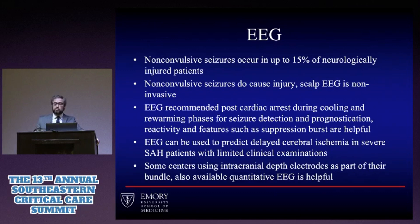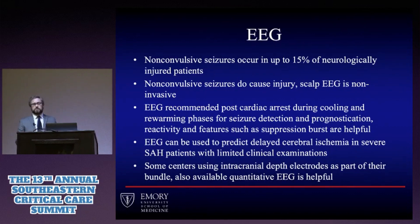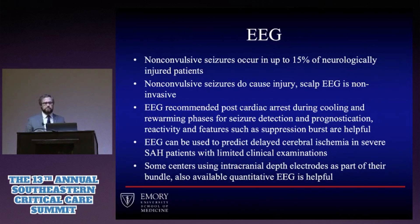We're also doing EEG for delayed cerebral ischemia detection in severe subarachnoid hemorrhage patients, grade 3 to 5 on the Hunt and Hess scale, especially with limited clinical exams around day 3 to 10. There are papers showing it's predictive of that. Something particularly interesting is using intracranial depth electrodes as part of a bundle to detect things you really can't on a scalp electrode, including cortical spreading depolarizations, providing insight into the really sick brain and different treatment avenues.